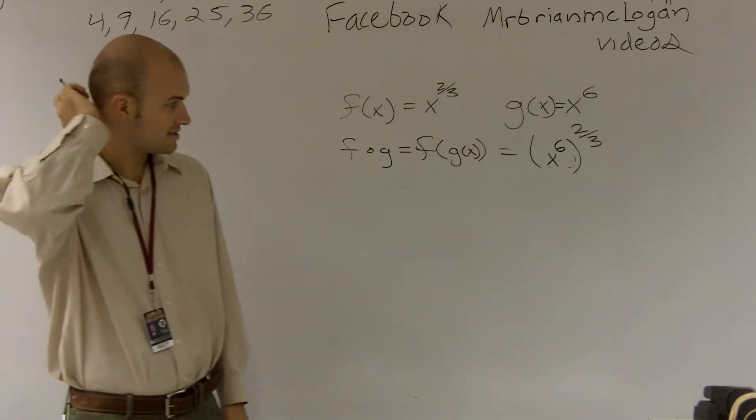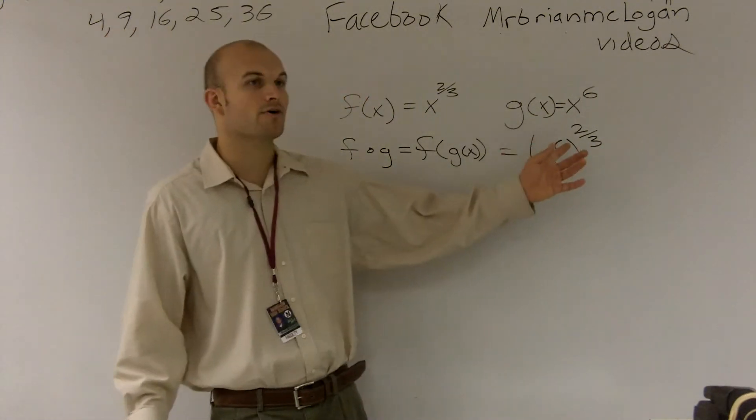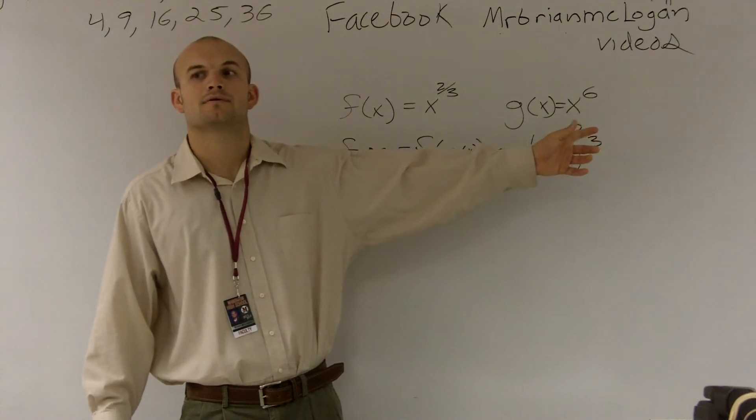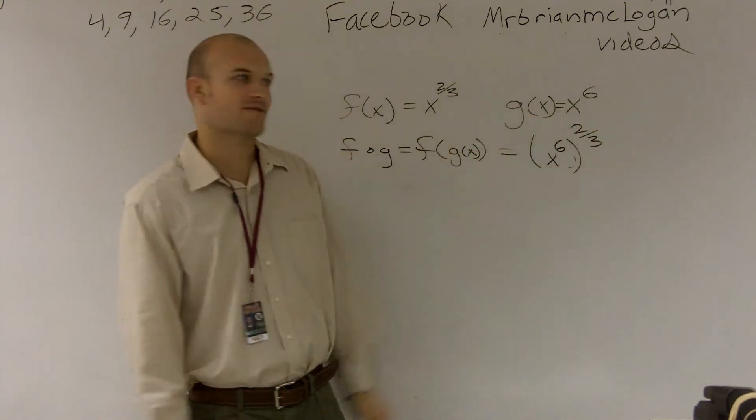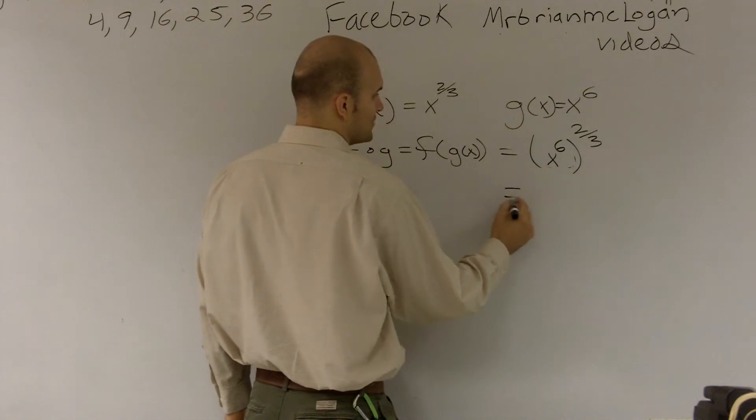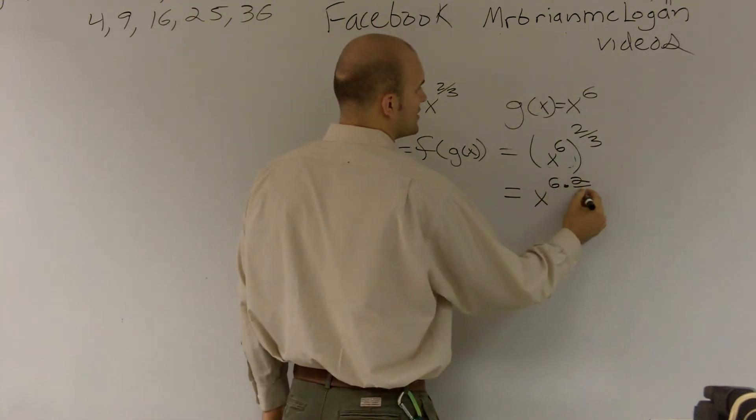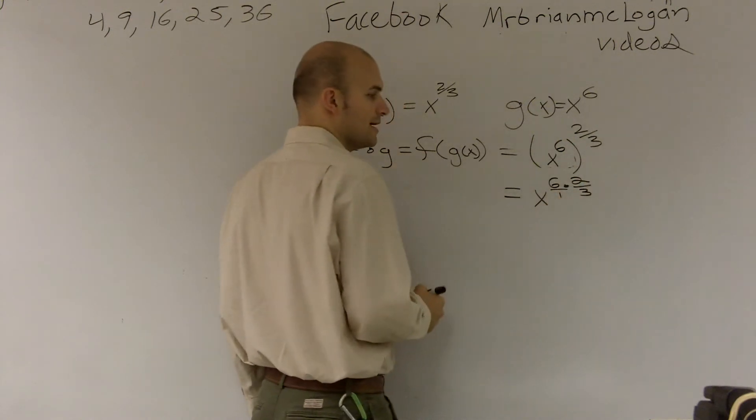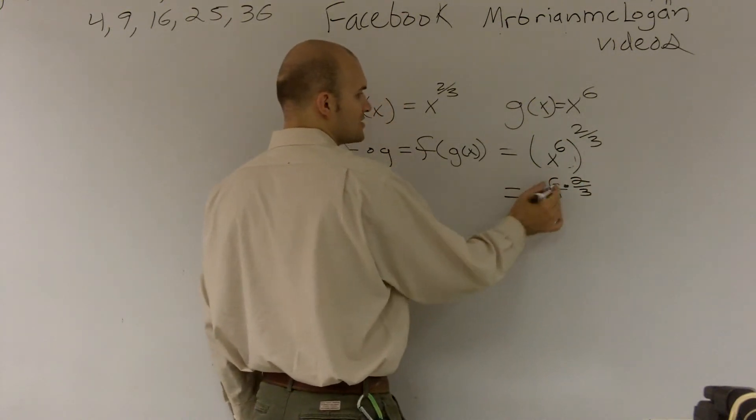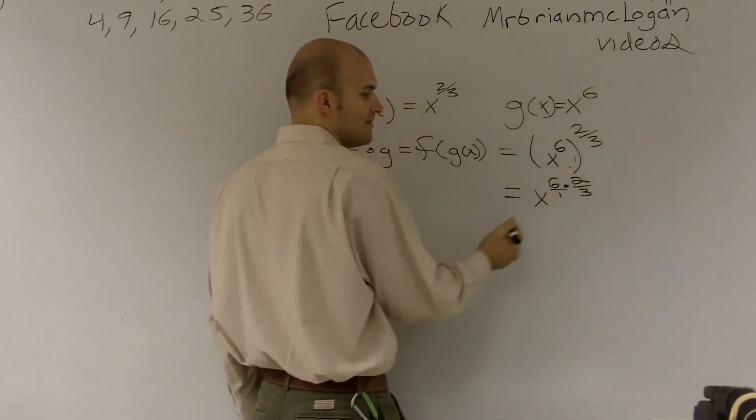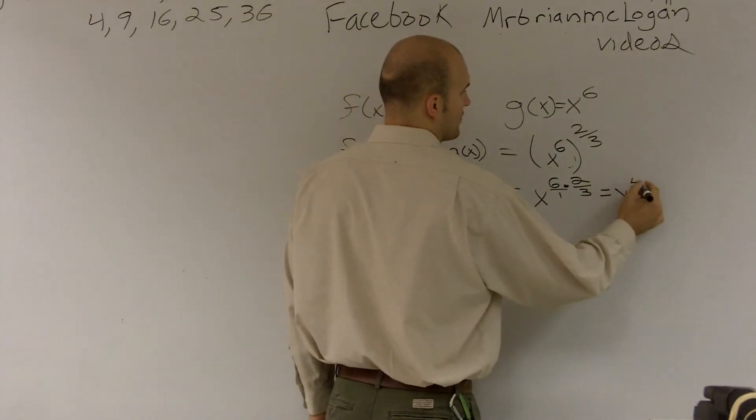So I plug in x to the sixth. And then whenever you have a power raised to a power, you multiply your fractions. So therefore, that gives you x to the sixth times two-thirds. You can change that to a fraction. Six times two is 12. Divided by three is going to give you x to the fourth.